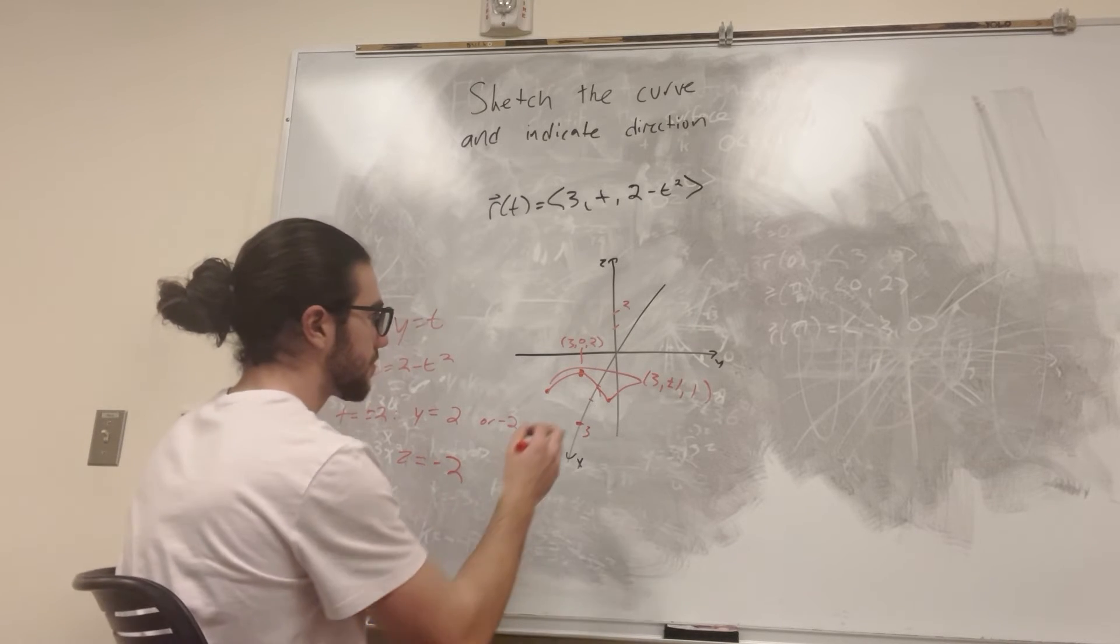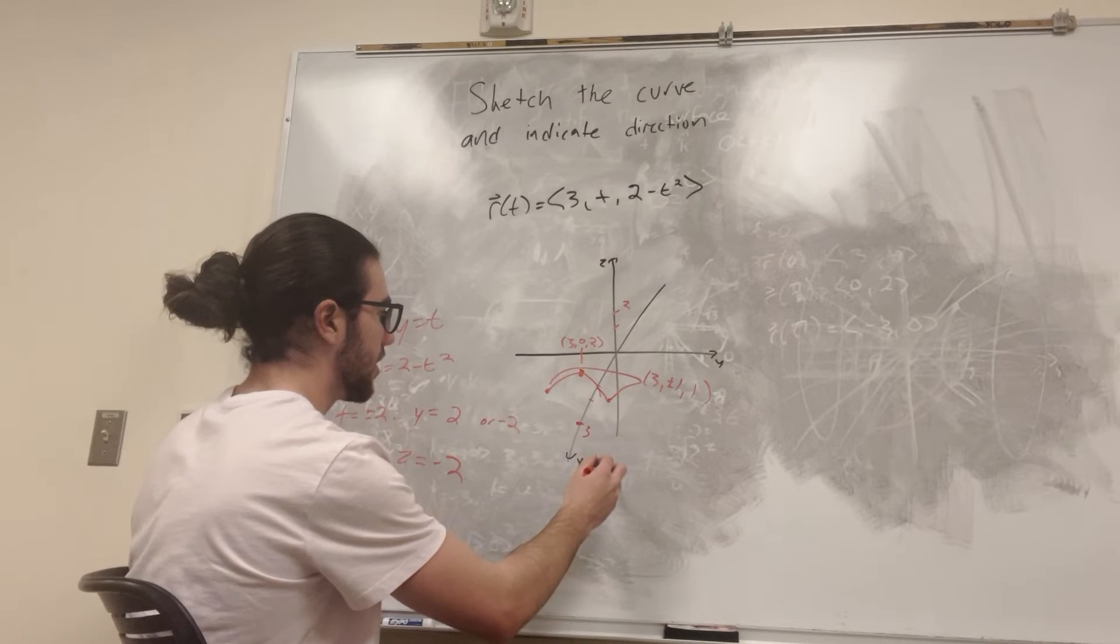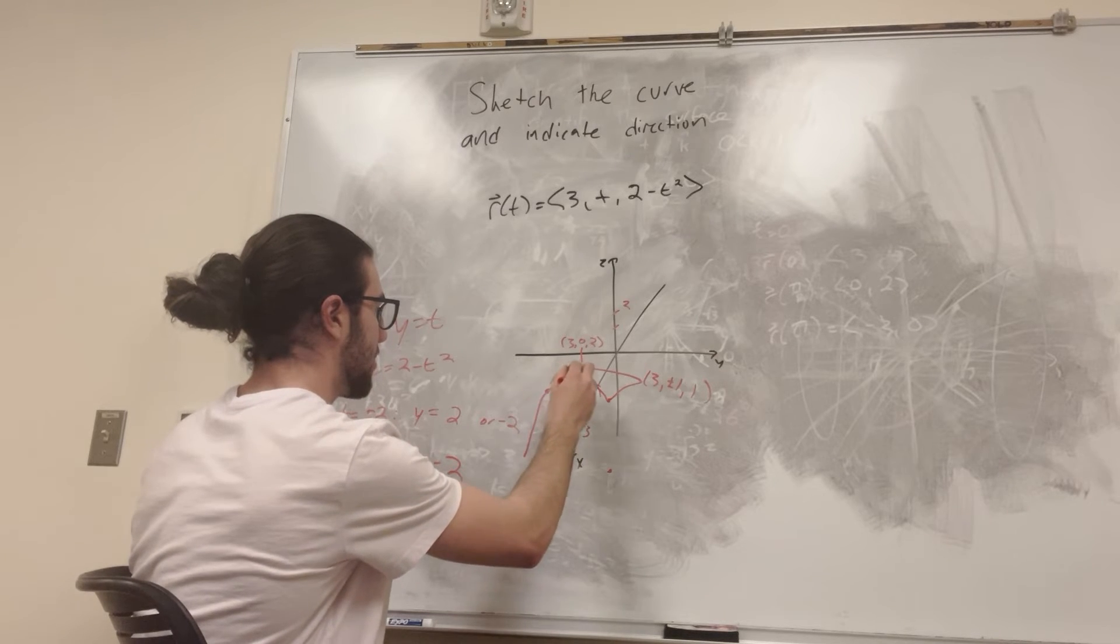So negative 2 is going to be down here. So this is what it looks like.